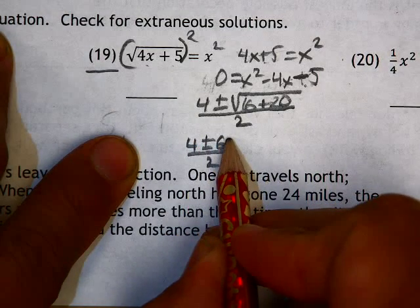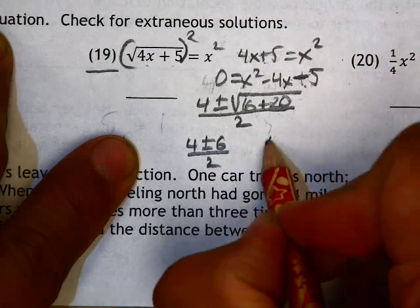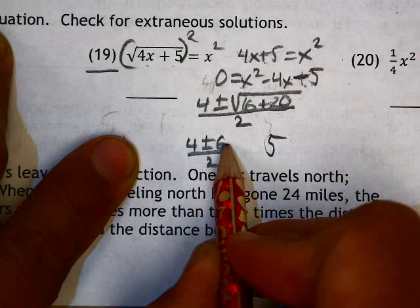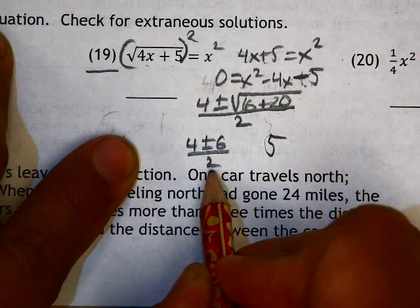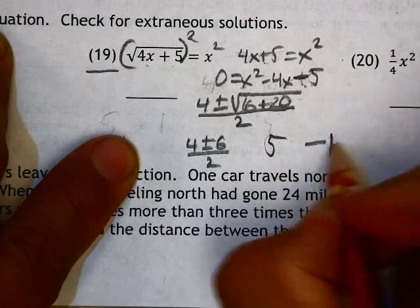4 plus 6 is 10. 10 divided by 2 is 5. 4 minus 6 is negative 2. Negative 2 divided by 2 is negative 1.